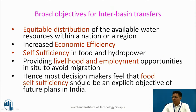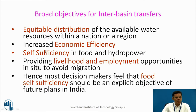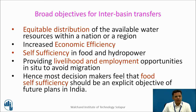What are the objectives of interbasin transfers? The first objective is equitable distribution of available water resources within a nation or at least for a region. Increase economic efficiency by redistribution of water. Self-sufficiency in food and hydropower. Providing livelihood and employment opportunities in situ to avoid migration of people from rural areas to cities. Hence, most decision makers feel that food sufficiency should be the explicit objective of future plans of India, for which interbasin transfer of water is essential.